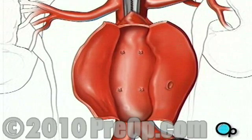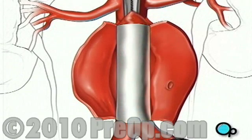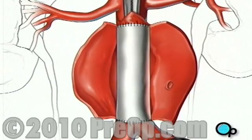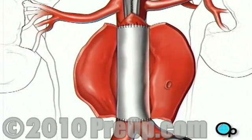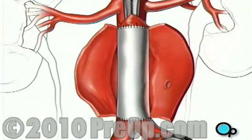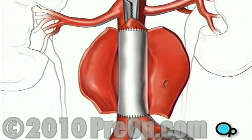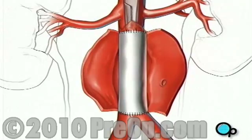A tube made of a sterile synthetic material can now be inserted into the blood vessel to provide support and reinforcement. It is then sewn into place. One by one, your doctor will remove the clamps, restoring blood flow to the legs.